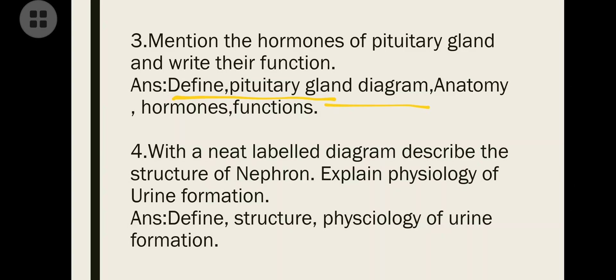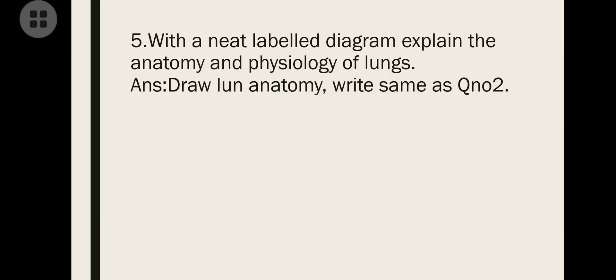Whatever you do, follow the structures - at least draw structures for whatever you know. Try to write the structures, then write what's in those structures. For example, nephron contains Henle's loop, distal convoluted tubule - write all that, just make points and write down. With a neat labeled diagram, explain the anatomy and physiology of lungs - same as question number two. After drawing the lung diagram and anatomy, you can write the mechanism.